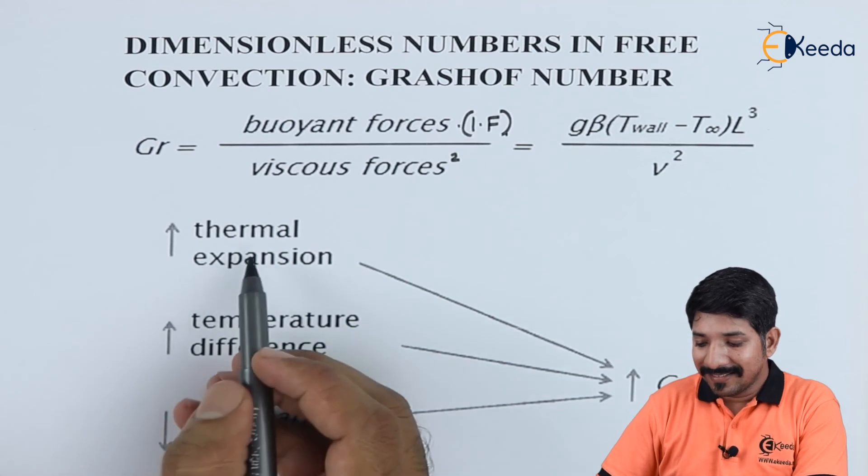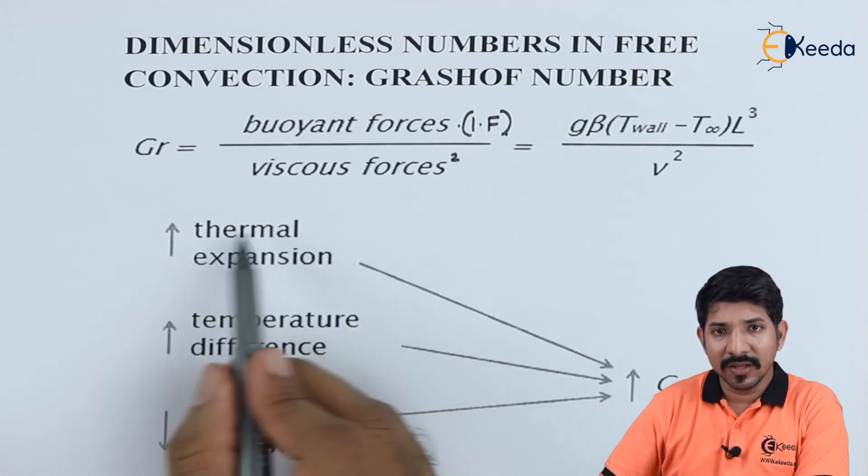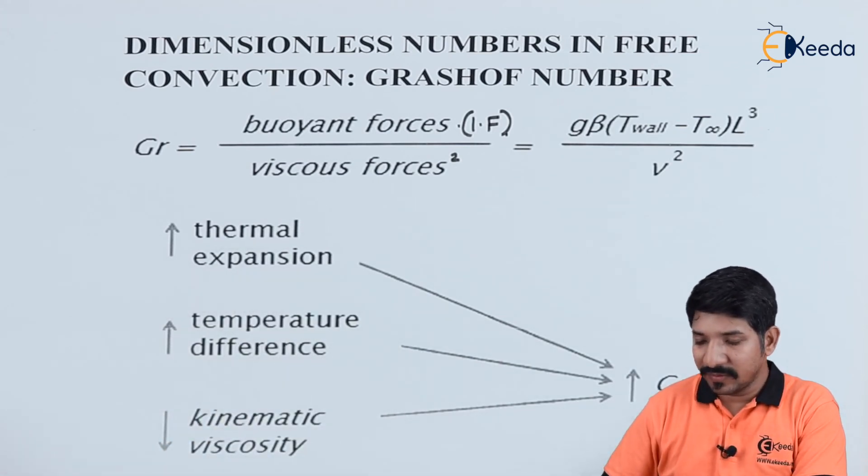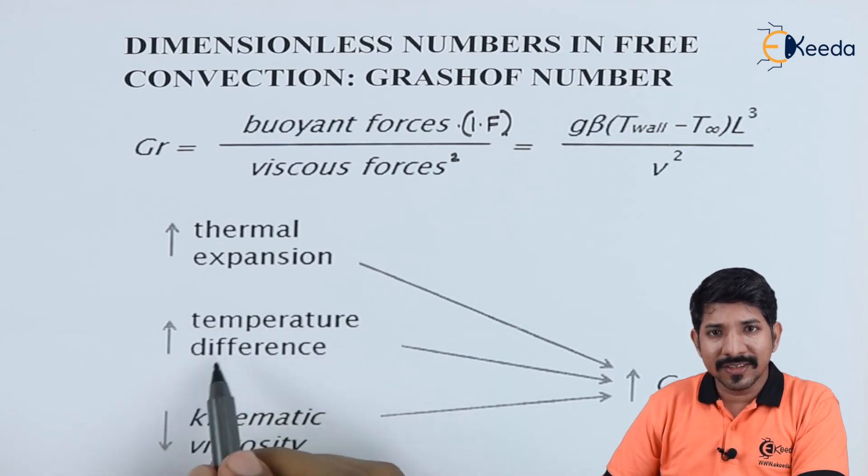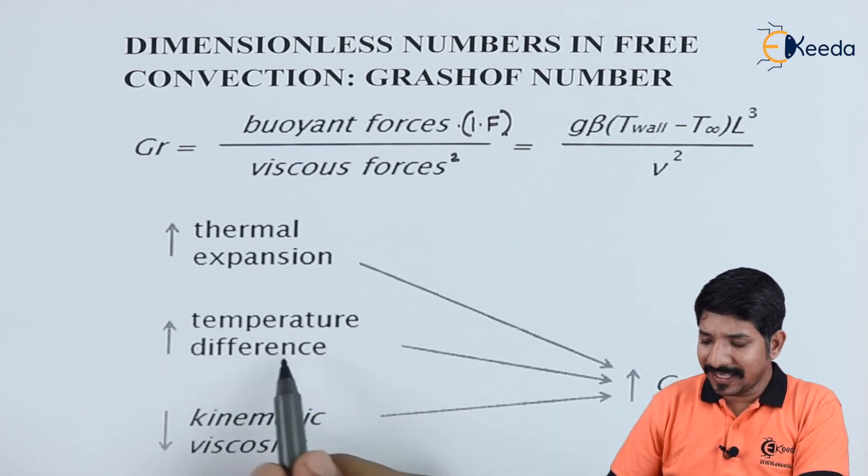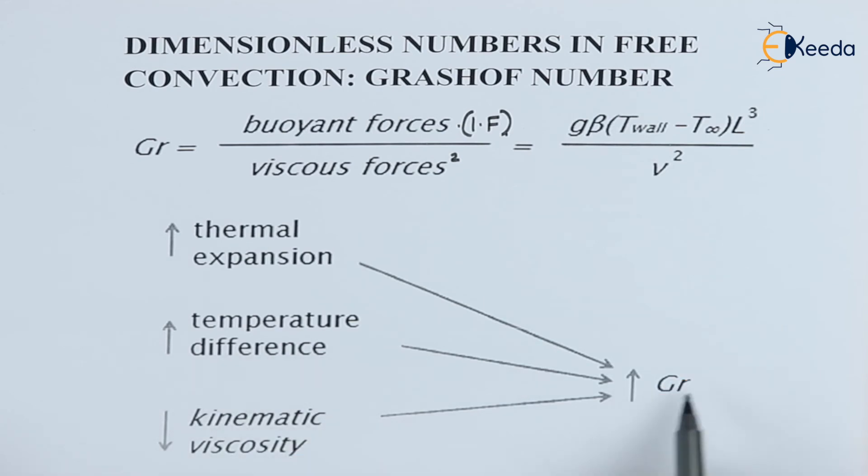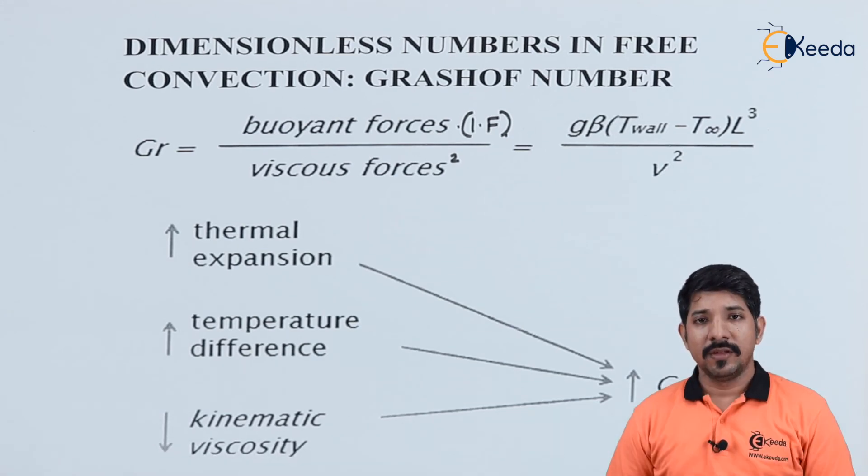Similarly, we can say that higher the thermal expansion, obviously, if the beta value is more, thermal expansion will be more, then higher will be the Grashof number. Again, the temperature difference, if more is the temperature difference, then more will be the change in density. And, hence, the heat transfer rate will be more and more will be the Grashof number. Similarly, for the kinematic viscosity, lesser is the kinematic viscosity, higher is the Grashof number.